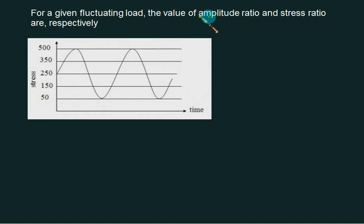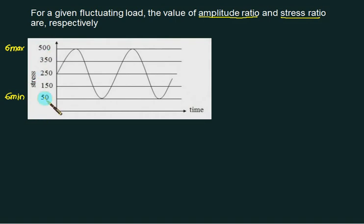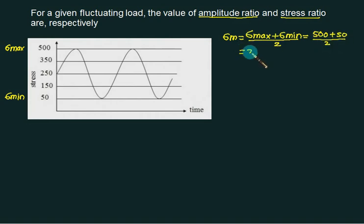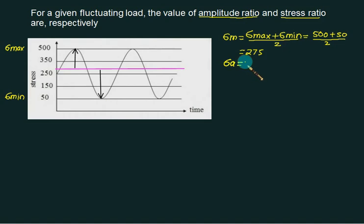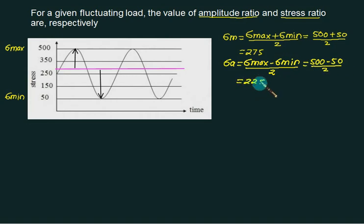Any combination is possible for a given fluctuating load. You have to find both the amplitude ratio sigma_a and the stress ratio r. For example, if the maximum value is 500 and the minimum value is 50, the mean value is sigma max plus sigma minimum divided by 2, which equals 500 plus 50 divided by 2, giving 275. So the mean value is 275. The amplitude stress is defined as sigma max minus sigma minimum divided by 2, which equals 500 minus 50 divided by 2, giving 225.